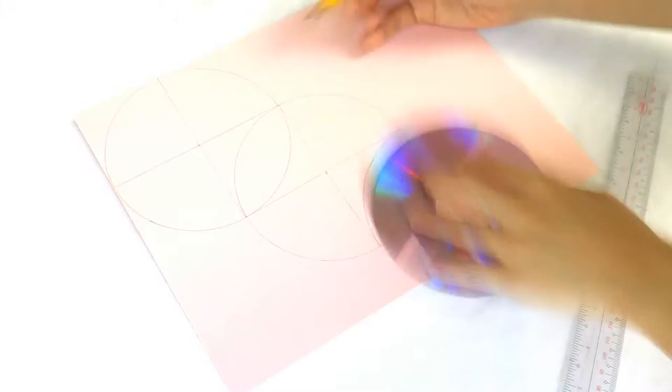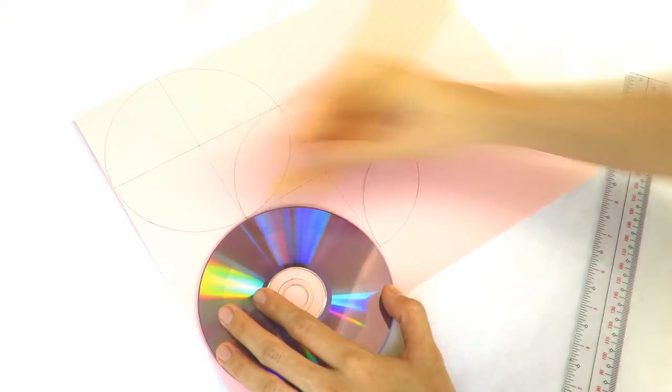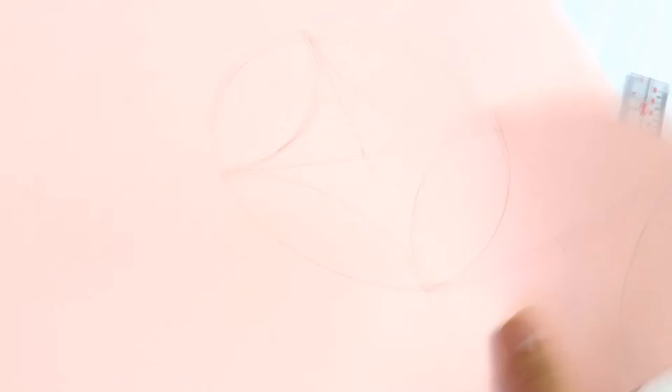After this, you will just draw or trace curvy lines connecting all four quadrants like I'm doing to finish your template. So then, get your scissors and cut out the outline of your two pizzas.